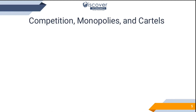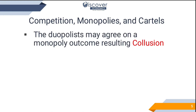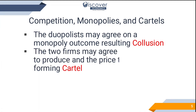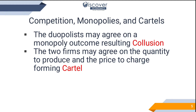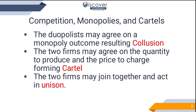Oligopolies can convert into competition, monopolies, and cartels. Firms may agree on a monopoly outcome resulting in collusion — they may work together and form a collusion. Two firms may also agree on the quantity to produce and the price to charge, forming a cartel, working together in terms of production, pricing, or sharing technological resources.